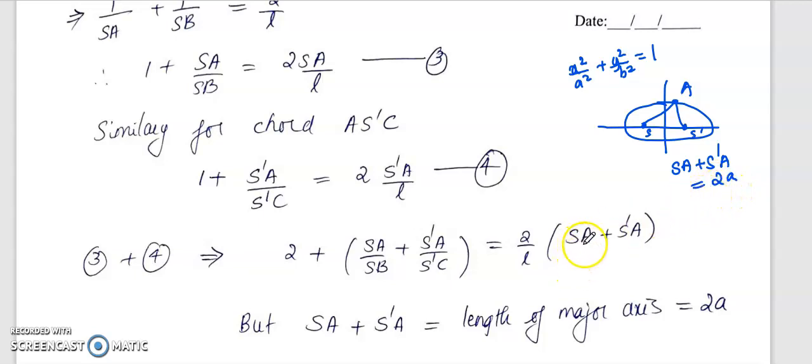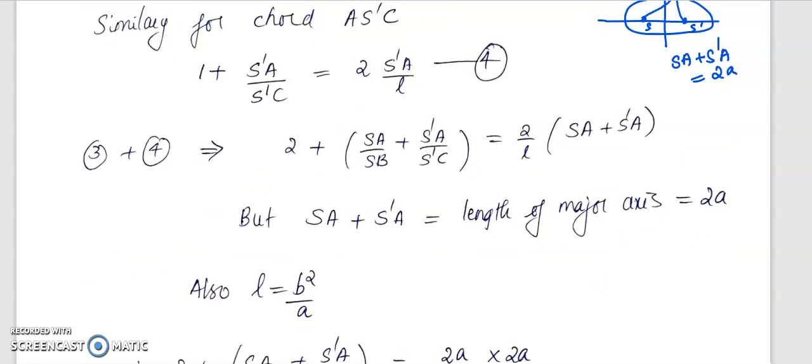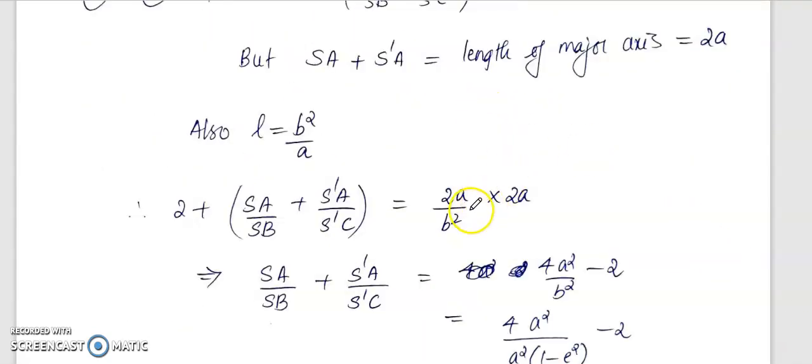Here SA plus S'A will be equal to 2a. Now we know l, the length of the latus rectum, that is b² by a. So therefore on the right side you will get 2a by b² into 2a. Taking 2 to the right side, so taking 2a by b² minus 2.